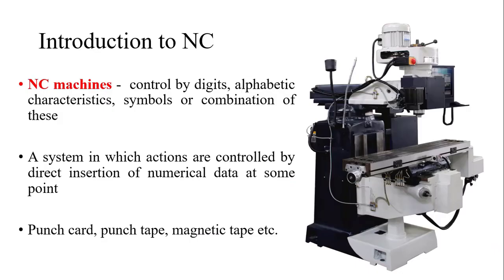So what are NC machines? These are machines which are controlled by digits — digits meaning 0 to 9 — and alphabetic characters like A to Z, and combinations of these. So if these machines are controlled by alphanumeric characters, a system is introduced in which actions are controlled by the direct insertion of numerical data. There is a small computer inside the machine. Even though it is not fully computerized, you insert NC data — alphanumeric codes — into these machines and then you can perform work on them. The direct human contact is very less. The data can be inserted in the form of punched cards, punched tape, or magnetic tape.